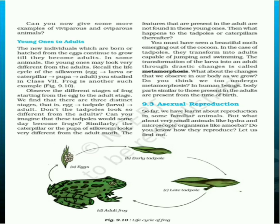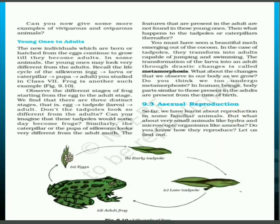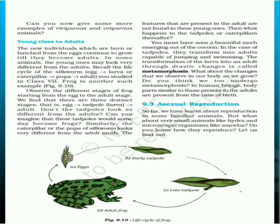Coming to young ones to adults — we know that fertilization is the fusion of male and female gametes. After fusion of male and female gametes, we get a zygote. The zygote is a single-celled structure.